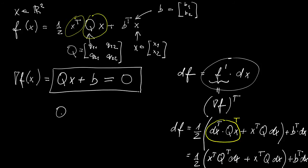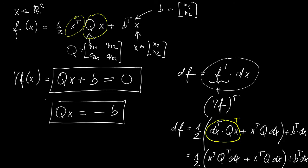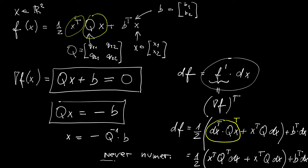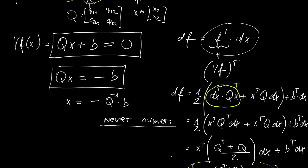To find the first-order necessary conditions we set the gradient equal to zero, requiring us to solve Q times x equals minus B. The solutions give us the critical points. In principle you could write x equals minus Q inverse times B, but please never solve this numerically by computing the inverse — in MATLAB always use Q backslash B instead.